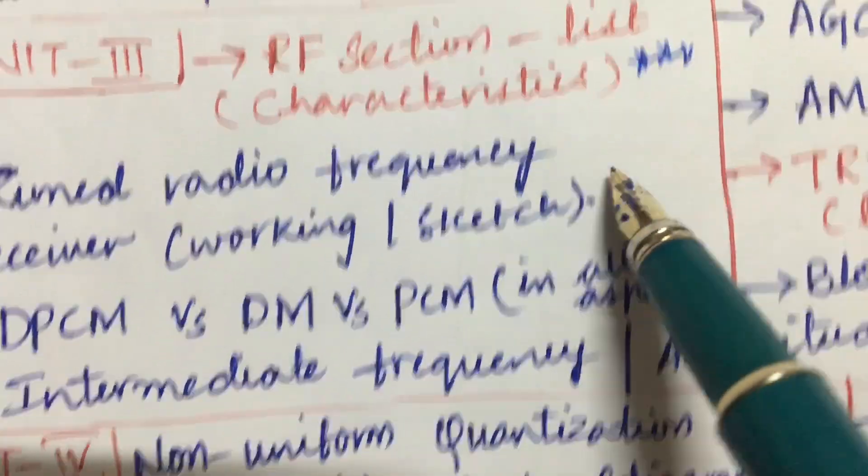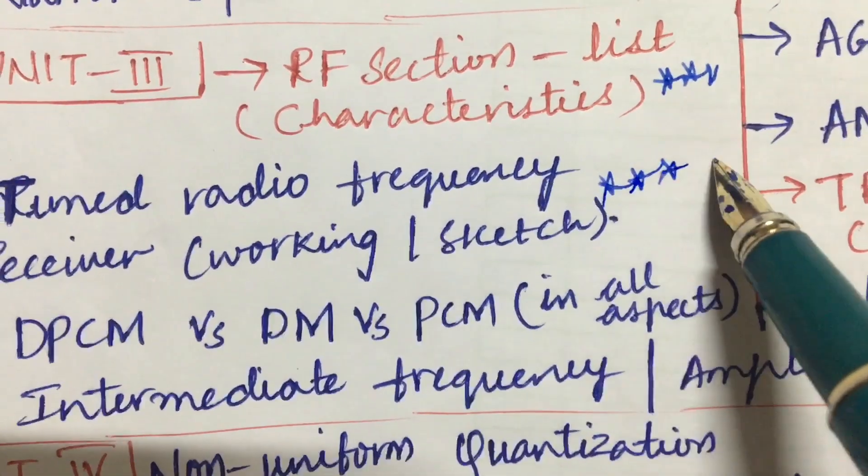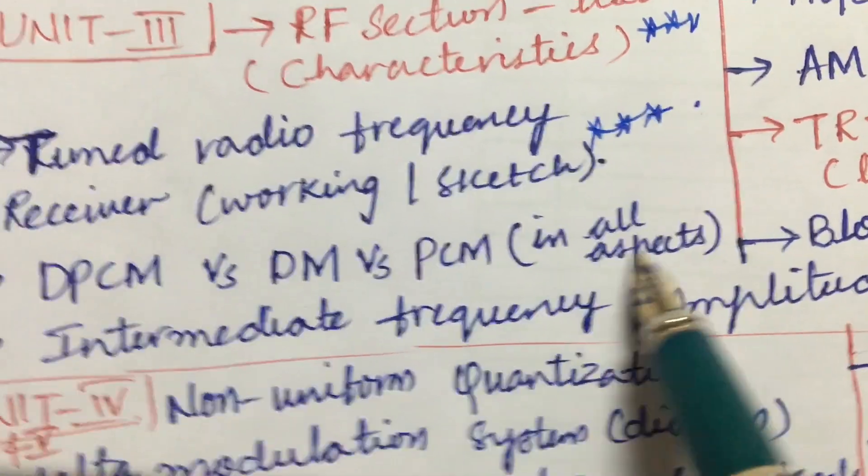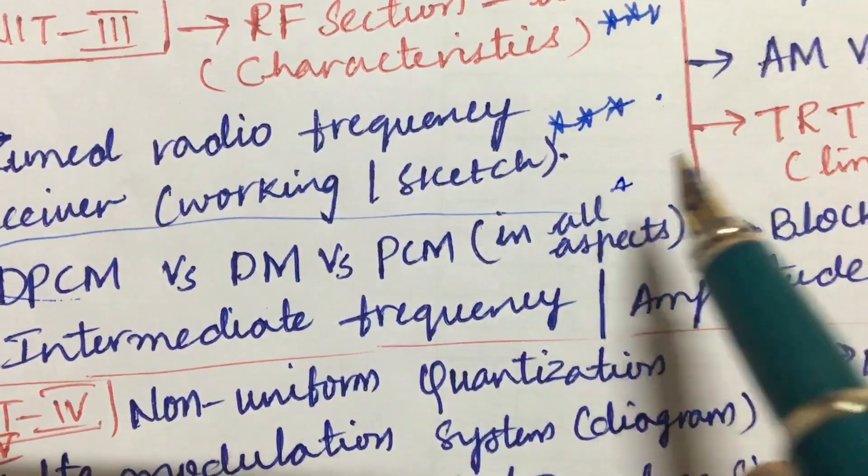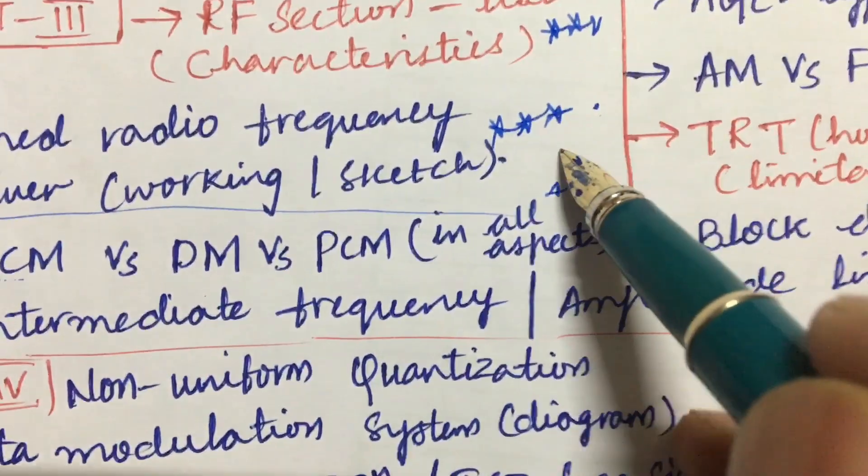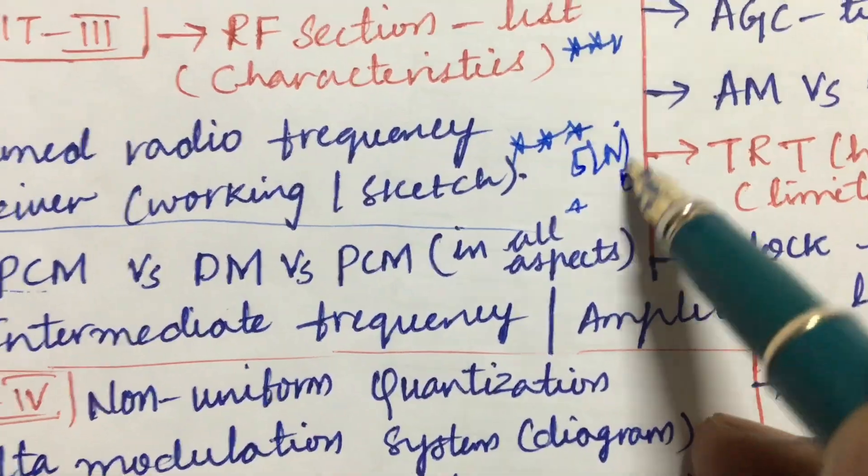And the tuned radio frequency receiver working and sketches are several times we can expect this to be one of the important questions. And highlighted one, DPCM versus DM versus PCM in all aspects also asked several times for an 8 mark question, and the intermediate frequency and the amplitude limiting. From this part we can expect 5A as well as 5B.